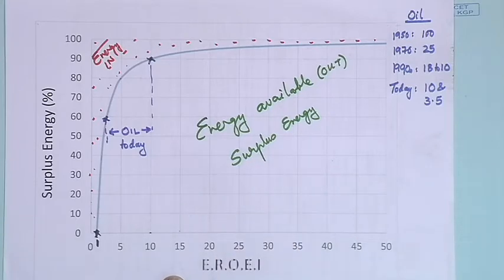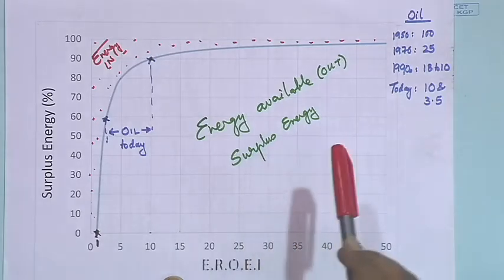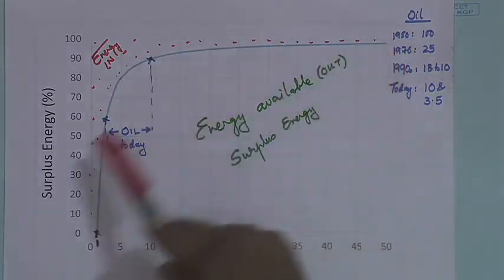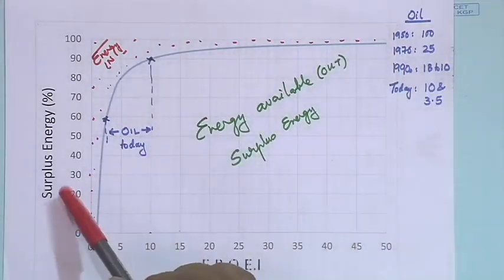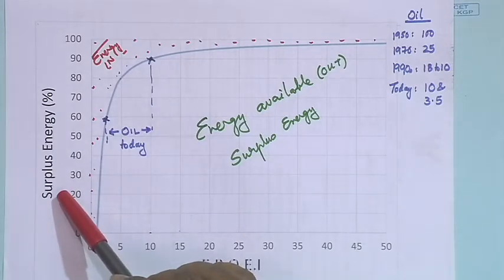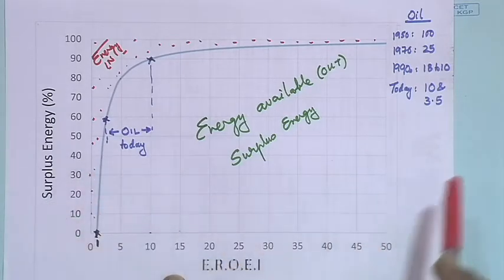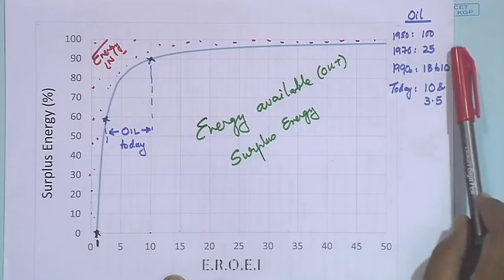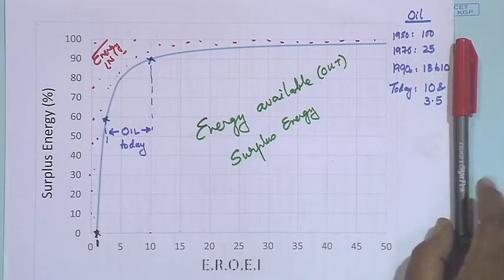The curve has EROEI on the x-axis and surplus energy on the y-axis. Looking historically, in the 1950s, we could spend one barrel of oil to get 100 barrels out. So the surplus energy available was 99% — only one barrel out of 100 was spent to extract those 100 barrels.